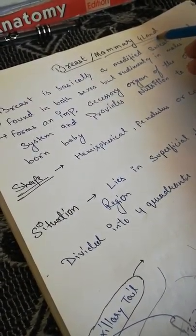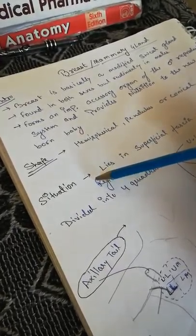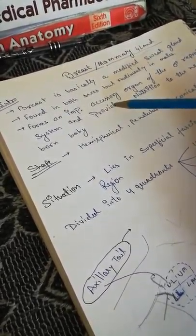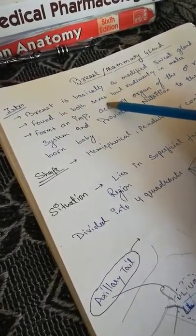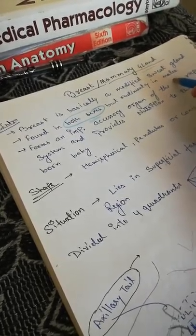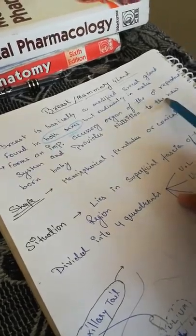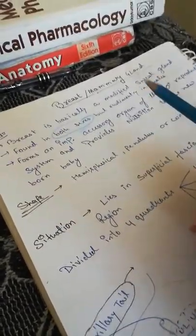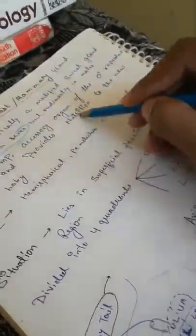So what is the breast? Breast is basically a modified sweat gland. This is the introduction — shape and situation. It is a modified sweat gland found in both sexes, but it is rudimentary in males. It forms an important accessory organ of the female reproductive system and provides nutrition to the newborn baby.